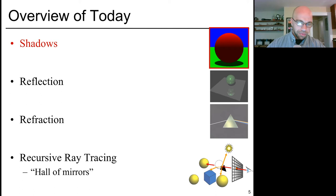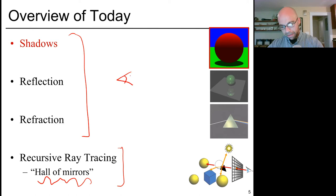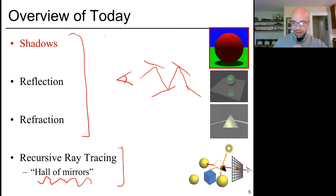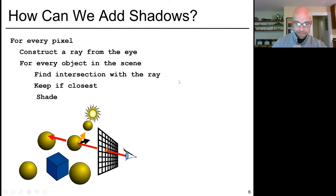In today's lecture, we'll talk about shadows, reflection, and refraction. We'll conclude with a general discussion of recursive ray tracing — the classic hall-of-mirrors effect, where a recursive algorithm captures light bouncing through a series of mirrors by ray tracing from your eye to the first thing it sees, then from the reflected ray to the next, and so on. We have to be careful to combat infinite recursion, so we may put a depth limit on this procedure.